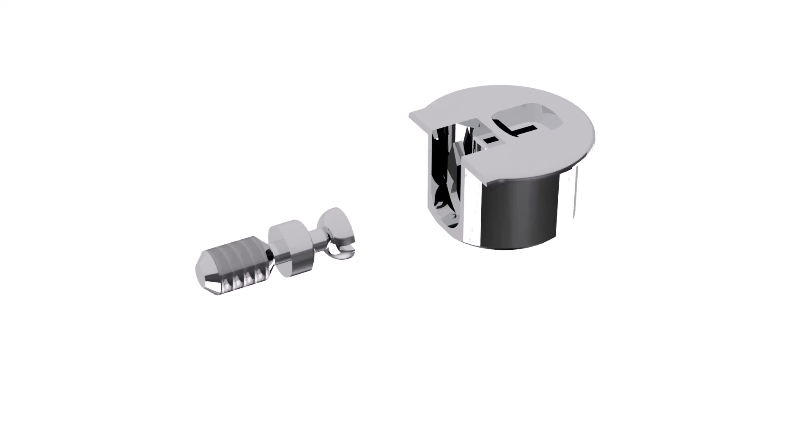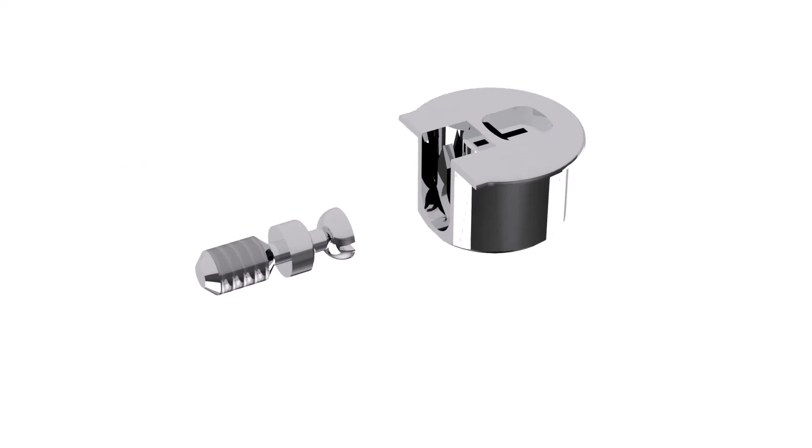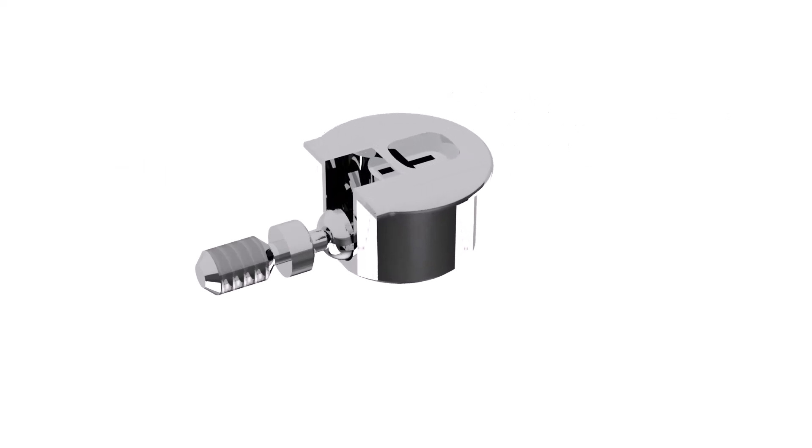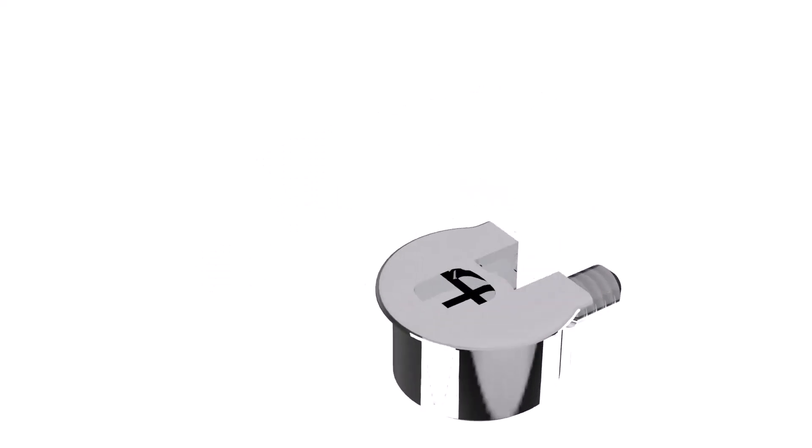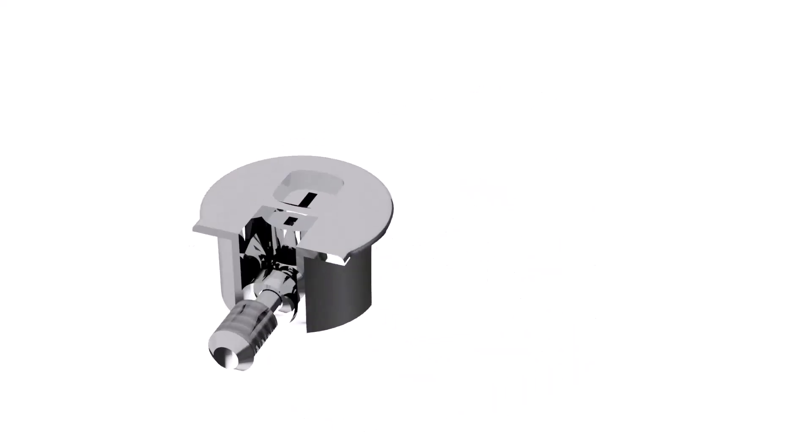This connector has two components, a connecting bolt, which is screwed into the supporting nestling panel, and the connector housing, which is attached to the perpendicular pillar panel. In assembly, I will put these two components together in a single assembly and treat it as a single group object.